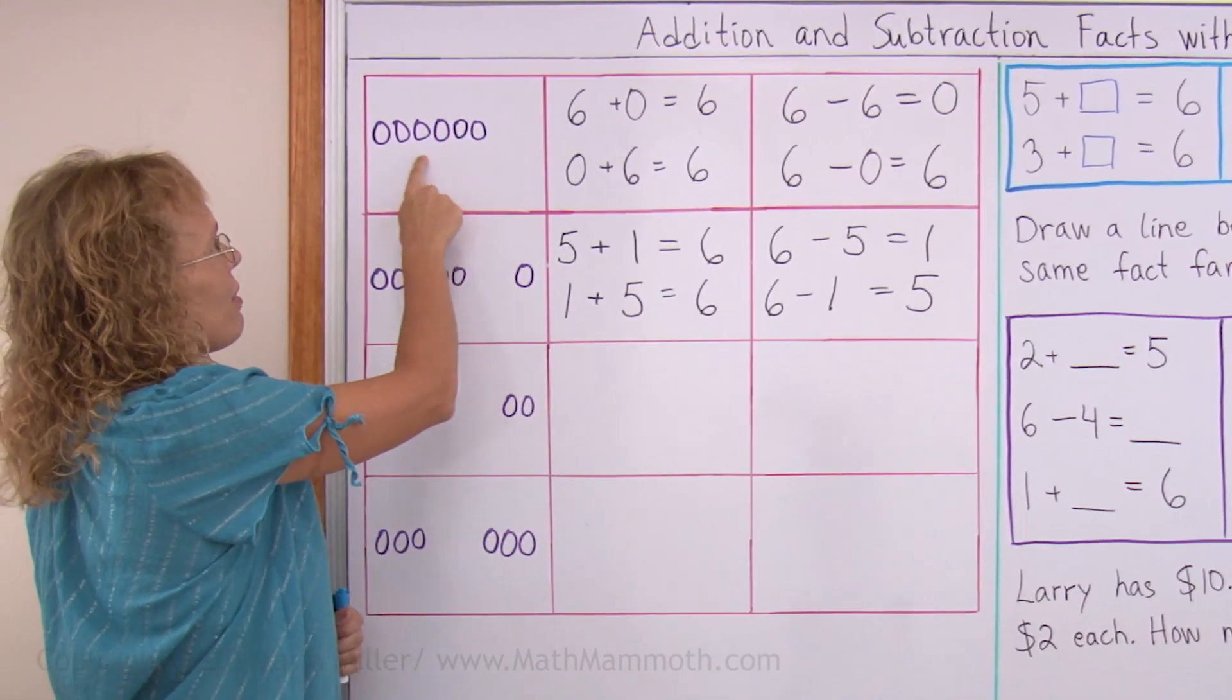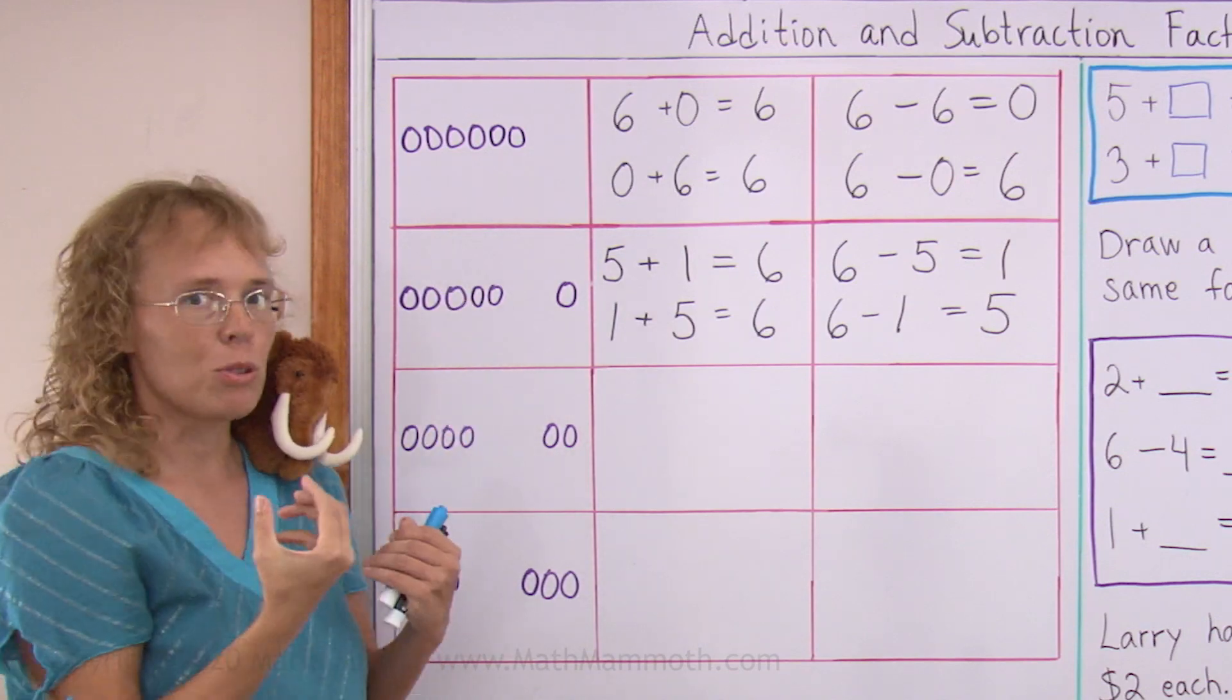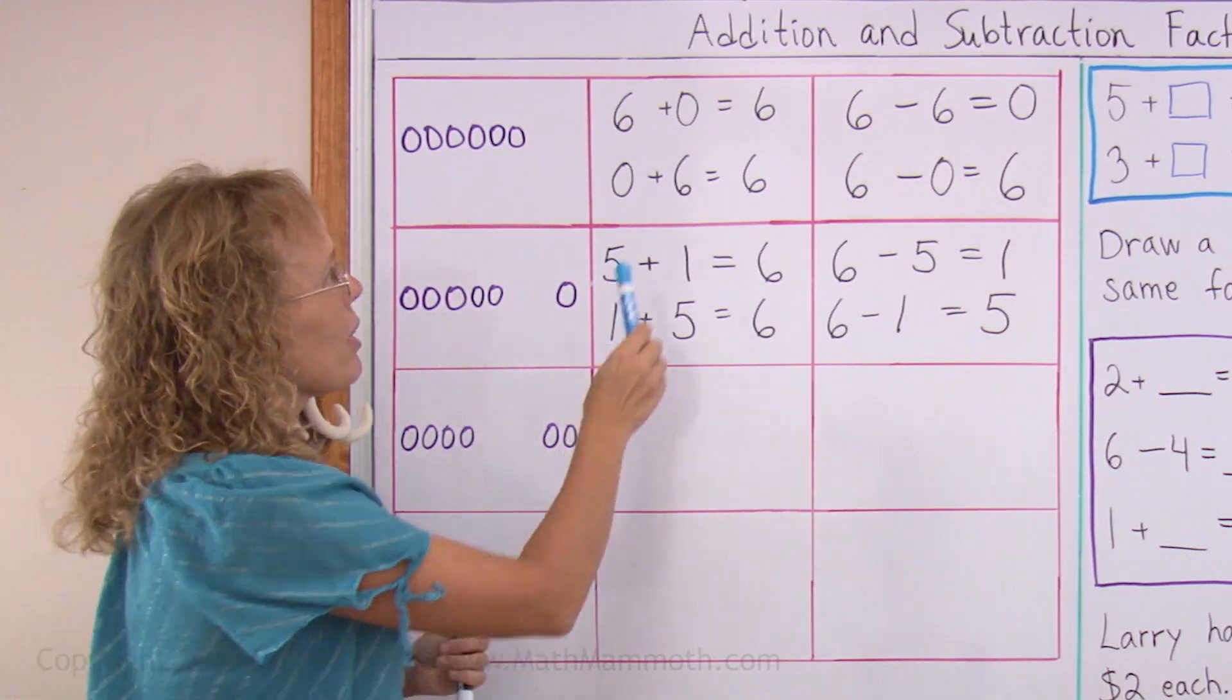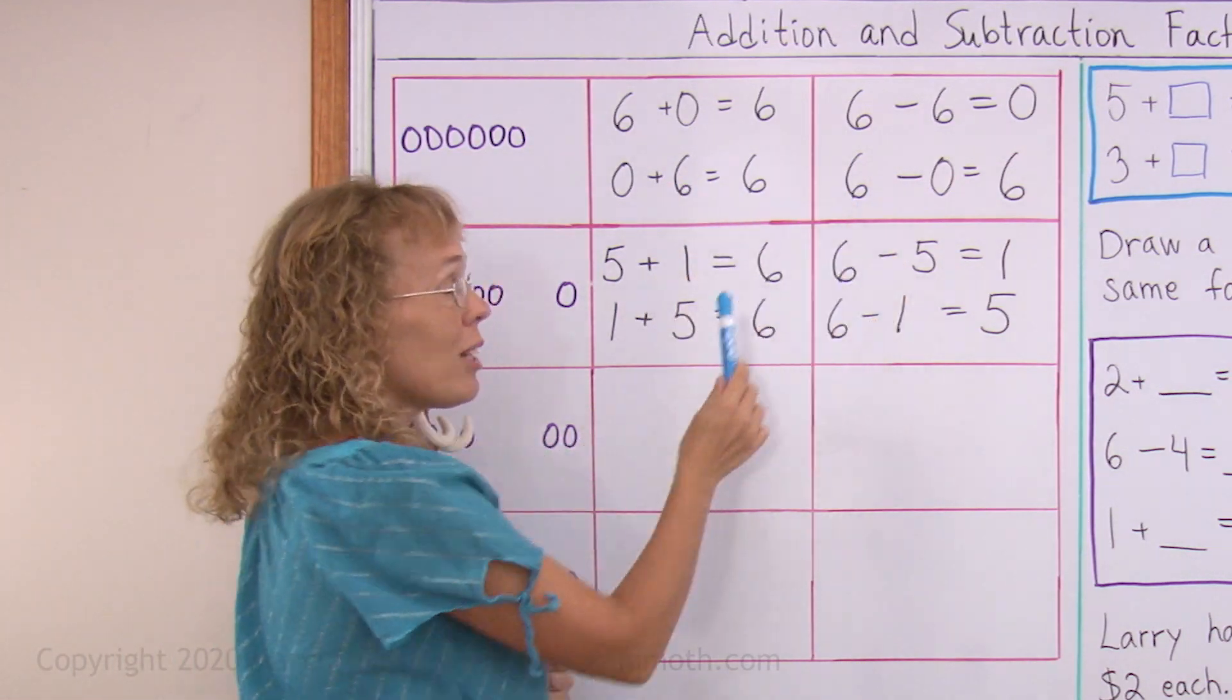For example, here's one. We have six and zero, two groups: six and zero. And we get these two addition and these two subtraction facts, as you know.